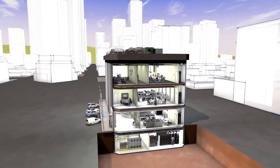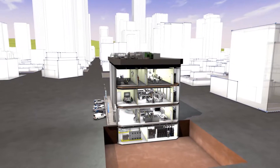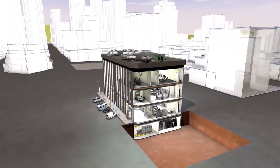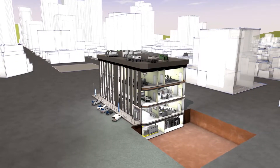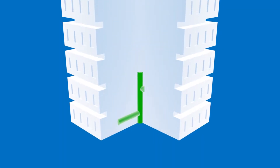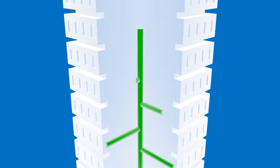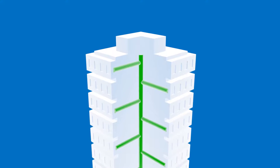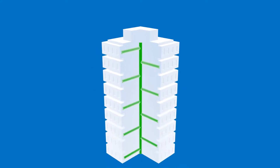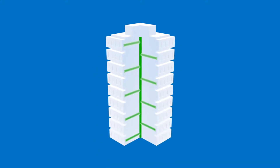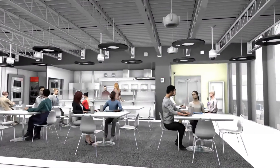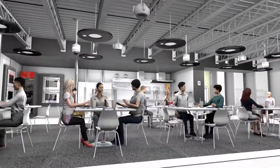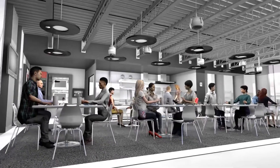Smart building design requires careful attention to optimizing network performance, empowering today's transformations in technology and workplace behavior. An IP-enabled environment provides tenants a flexible, integrated user experience across various devices and locations. This maximizes the potential within an Internet of Things ecosystem where devices and systems work together to increase productivity and efficiency.